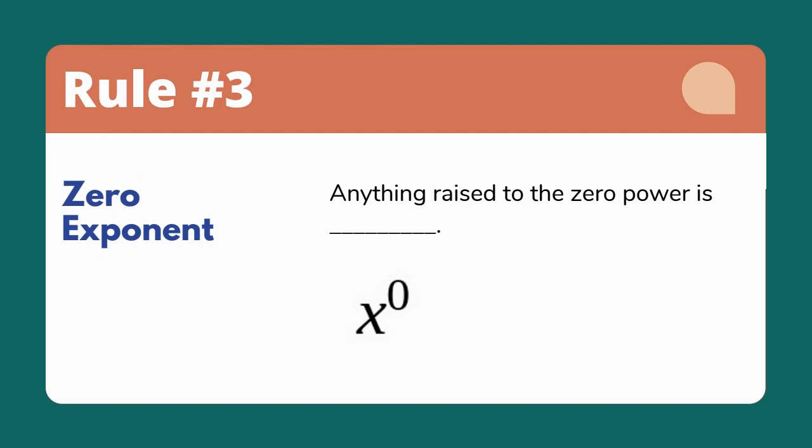Our third exponent rule says anything raised to the zero power is one. So x to the zero power is just the number one.